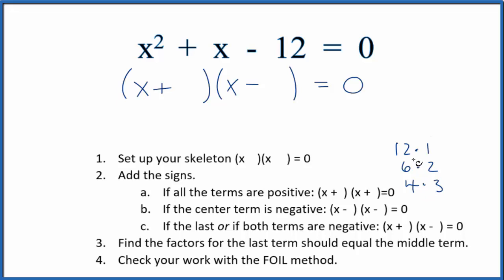It looks like if I had a positive 4 and a negative 3, that would give us this middle term, this 1 here in front of the x. So I could put a 4 here and a 3 here, and that would give me 1.